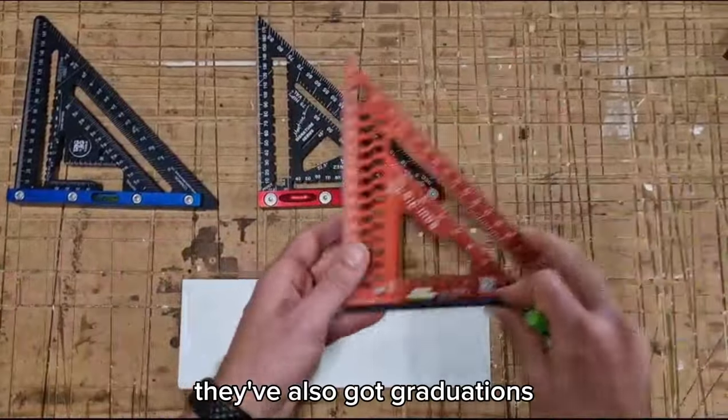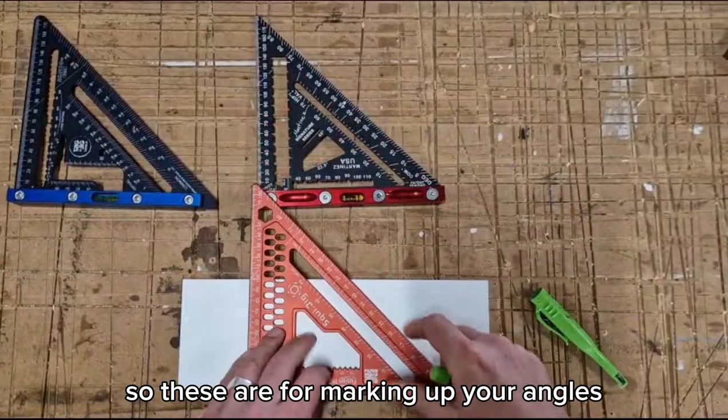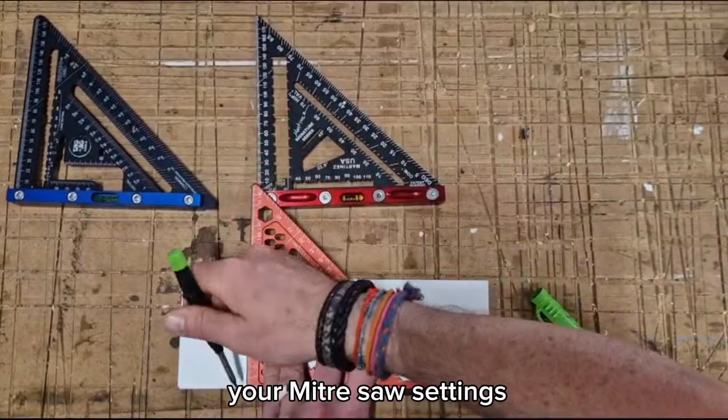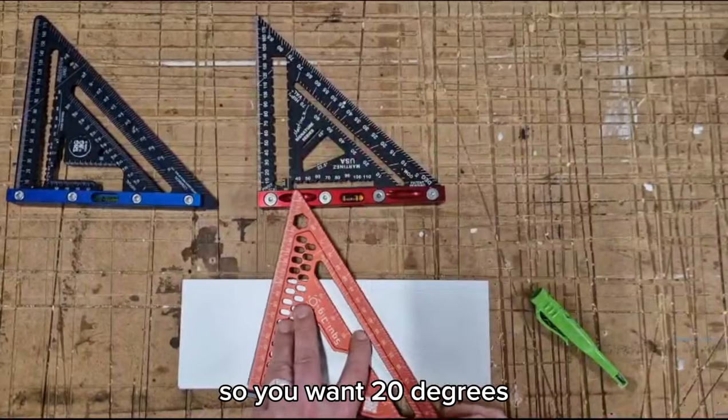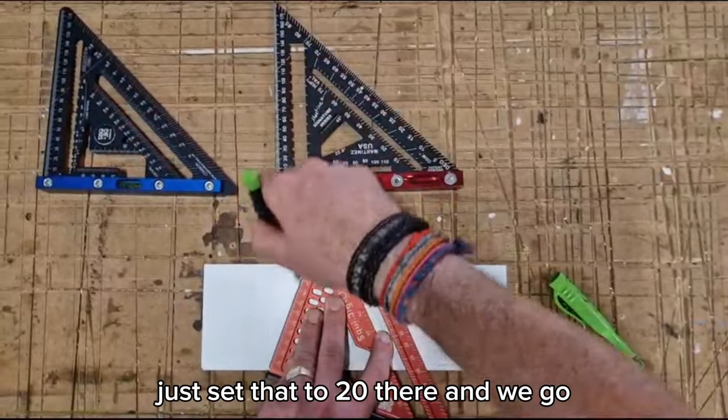They've also got graduations down the outside here. So these are for marking up your angles. This will correspond with your mitre saw settings. So you want 20 degrees, just set that to 20 there and away you go.